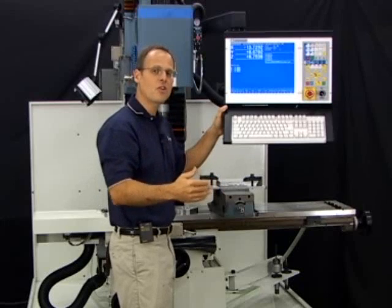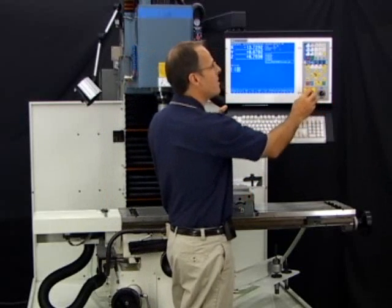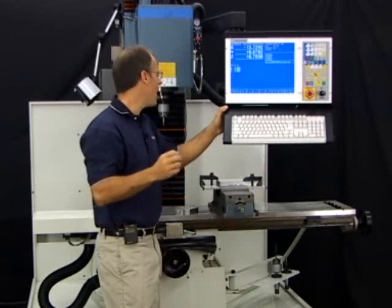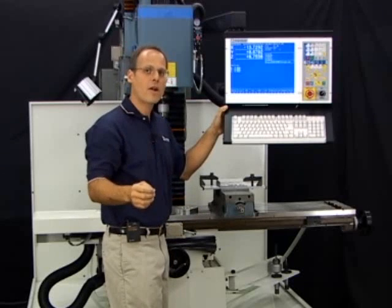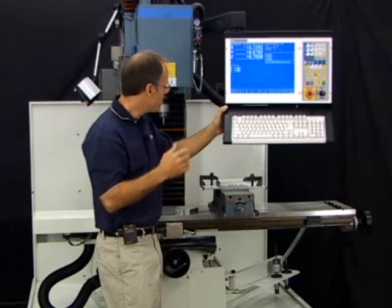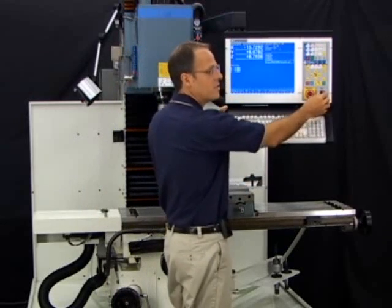You also have the feed rate override, emergency stop, and spindle speed override. These controls allow you to override the program feed rate and the program spindle speed on the fly. So if it's machining a little too fast or a little too slow, you can adjust it with the knob right here.